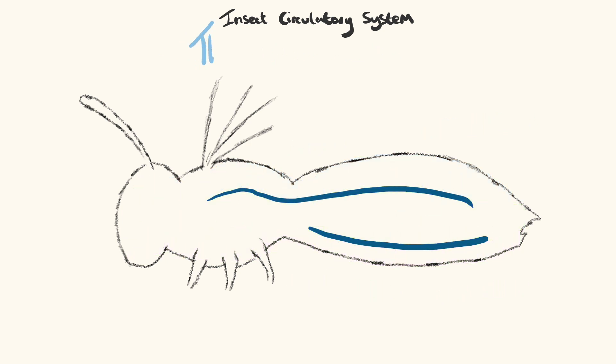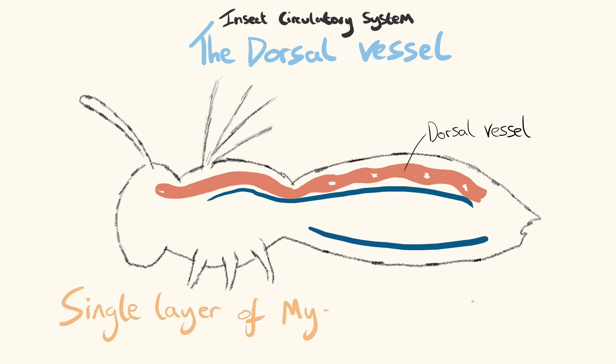The dorsal vessel lies within the pericardial sinus and extends longitudinally through the body along the dorsal wall, where it acts as the primary pump for haemolymph. It is the only vessel possessed by insects and its form is relatively simple, a tube composed of a single layer of myocardial tissue.